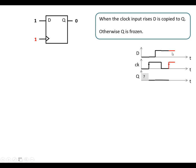Here the clock input rises again, so D is going to be copied to Q — Q becomes a 1. And if D changes again there's no change in Q. It's only when the clock input rises that D is copied to Q.